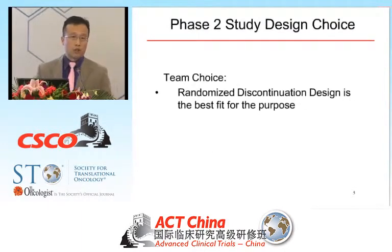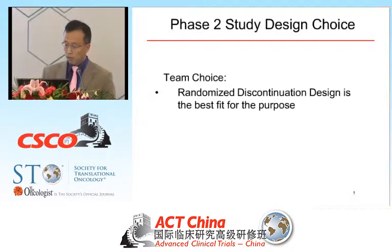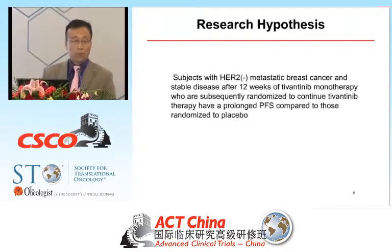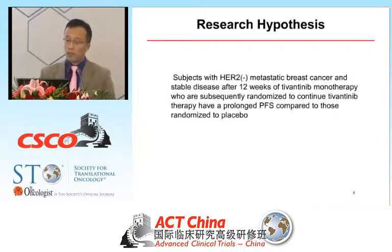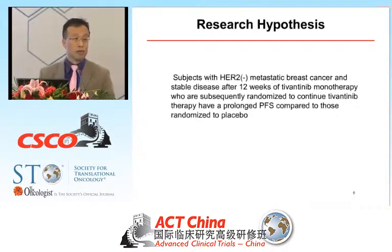The team reached consensus that a randomized discontinuation design is the best choice for this purpose. The team hypothesized that in subjects with HER2-negative or HER2-normal metastatic breast cancer who have stable disease at the end of a 12-week lead-in treatment period with tivatinib, patients randomized to tivatinib would have a superior PFS relative to the control arm with placebo.